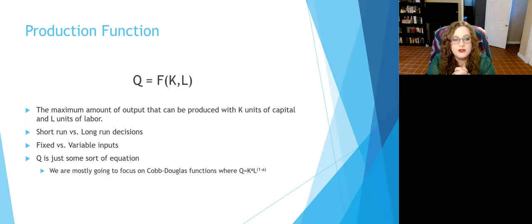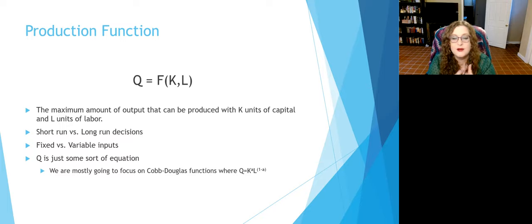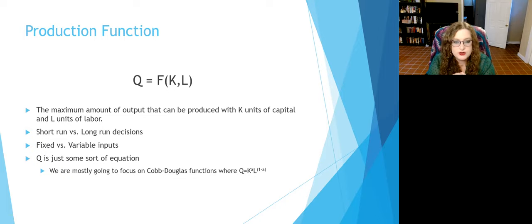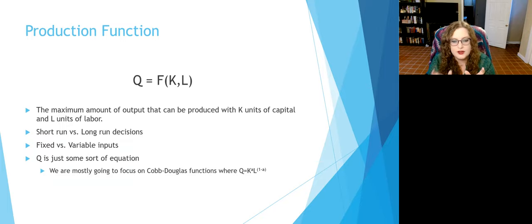Next is L, units of labor. Depending on the question, units of labor can change — it can be an additional worker, an additional hour worked, or some other way we measure our labor input. So everything that we produce, Q, is a function of the capital and labor inputs.